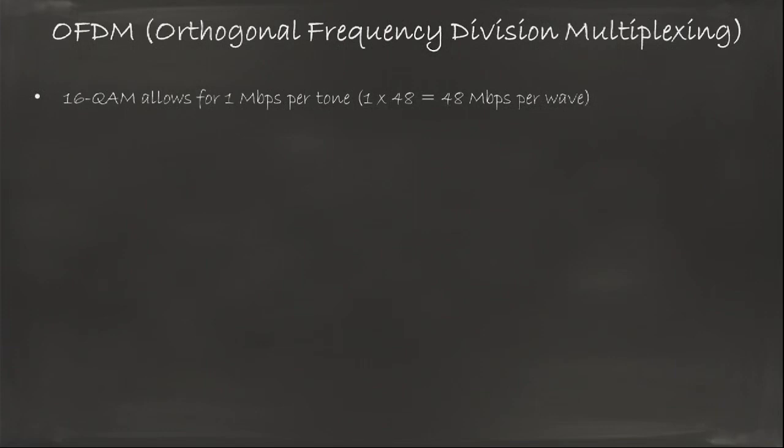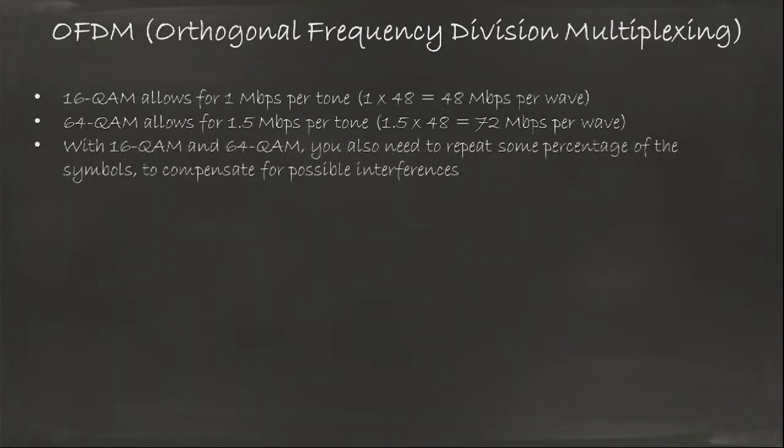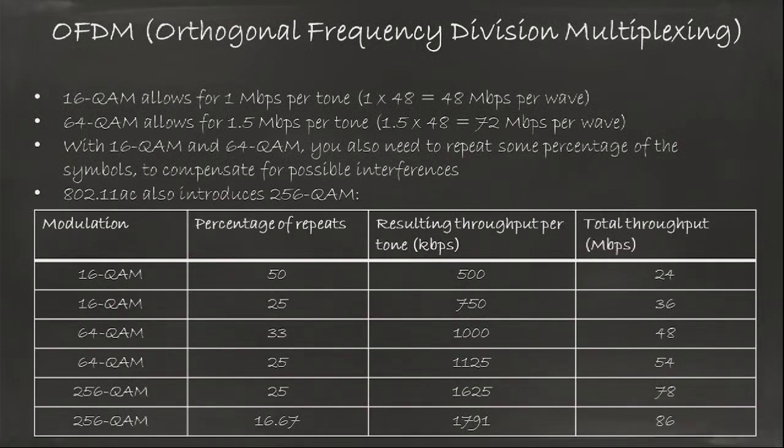If you look at 16-QAM, you can get all the way up to one megabit per second per tone per subcarrier. Times 48 tones, that's 48 megabit per second per wave. With 64-QAM, you can go all the way up to 72 megabit per second per wave. But just like with the others, you need to repeat some of those to avoid losses. You get 16-QAM, 50% repeat, you can get 24 megabit per second. And if you go all the way up to 64-QAM with a 25% repeat, you get 54 megabit per second. That's the speed you may have heard of in 802.11a and 802.11g. Recently, in 802.11ac, the idea came to also use 256-QAM. Instead of having 64 targets, I have 256 targets. That allows you to go even faster.